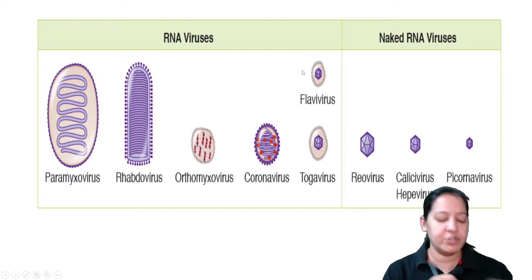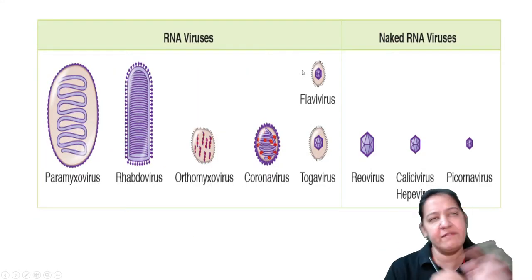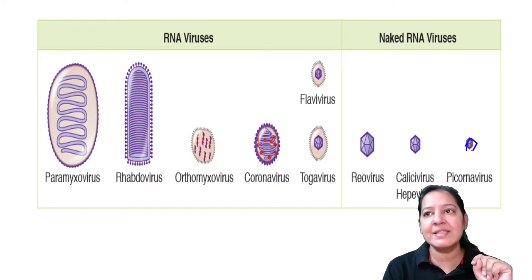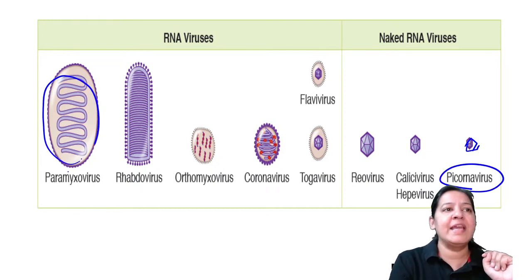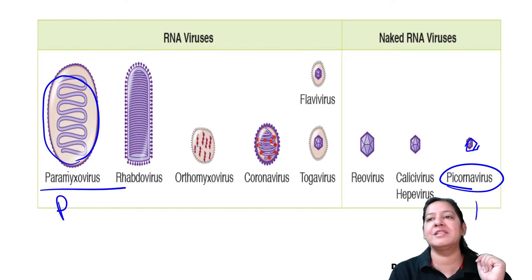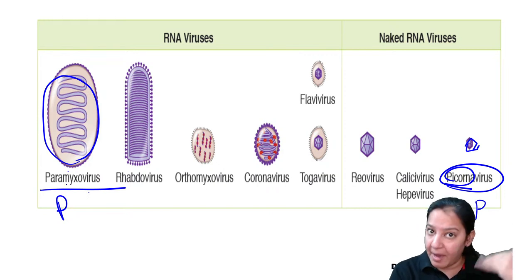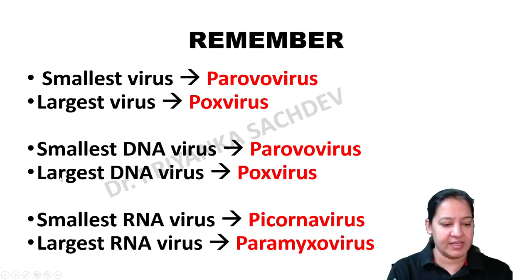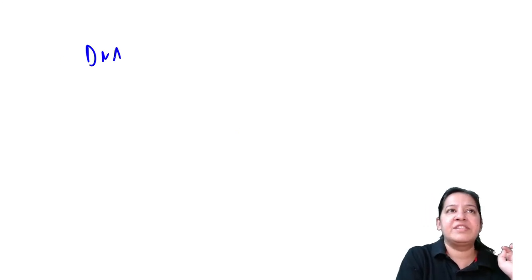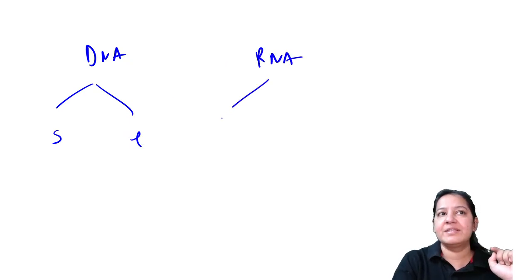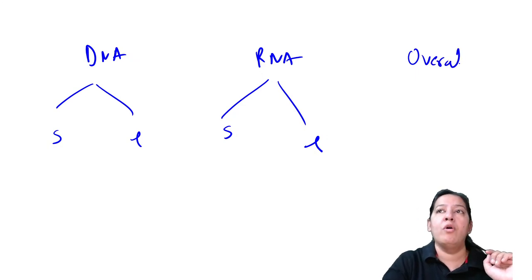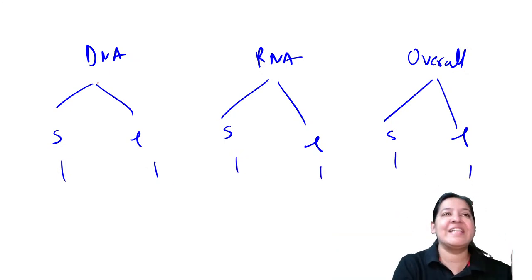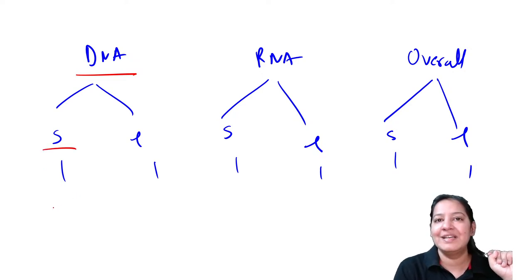Among the RNA viruses, there are many important ones. Among them, the smallest is Picorna virus - the word 'pico' means small. The largest is Paramyxo - the elder brother of Myxo, that is why it is the largest. So we have six questions: among DNA which is the smallest and largest; among RNA which is the smallest and largest; and overall which is the smallest and largest.